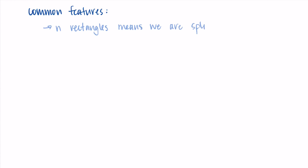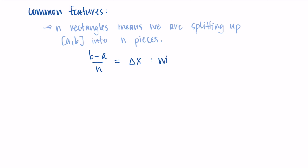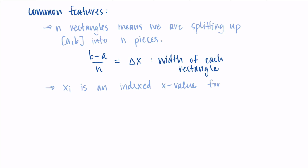Each type of Riemann sum has its own formula, but they share common features. First, we always have n rectangles — n is the number of rectangles, meaning we split the interval a to b into n pieces. The width of each rectangle is Δx = (b − a) / n: we take the length of the interval and divide it into n pieces. The x_i values are x-values on the interval from a to b, indexed so that i runs from zero up to some number, representing all the points we're summing over.